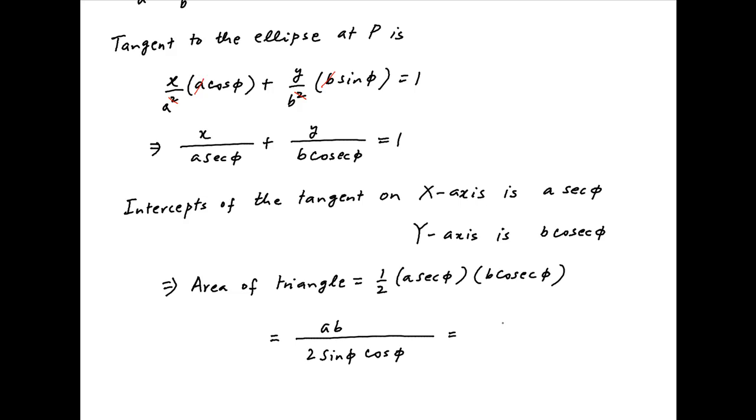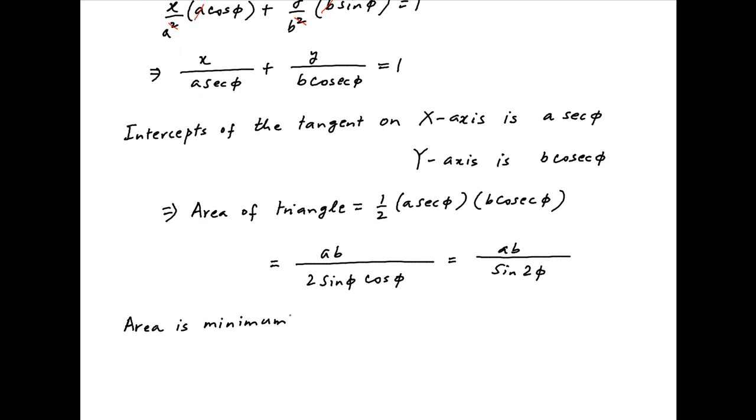The area of the triangle is minimum when the denominator sin 2 phi achieves its maximum, and this is when sin 2 phi is equal to 1. Therefore, the minimum area of the triangle is equal to ab, which is the required answer.